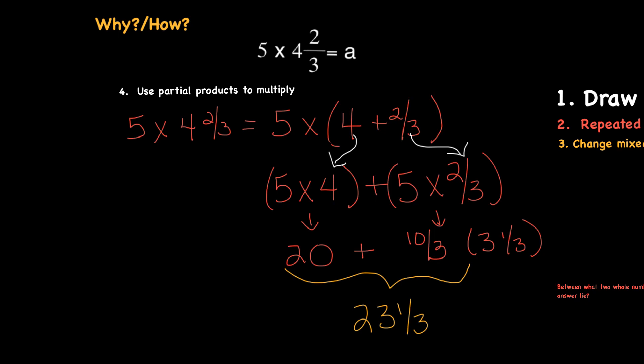So 5 times 4 is 20, and then 5 times 2 gives me my 10, and then I bring my 3 down for my denominator, which 10 thirds is equal to 3 and 1 third when we change that to a mixed number. So now I add my 20 plus my 3 and 1 third, which gives us a final answer of 23 and 1 third.